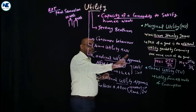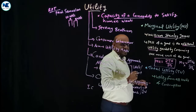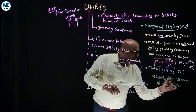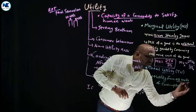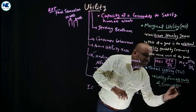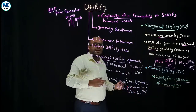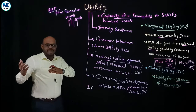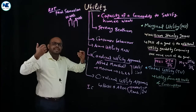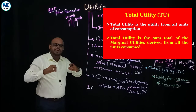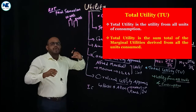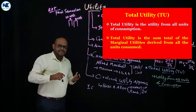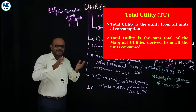Total utility is the utility from all units of consumption. That is, the utility gained by the consumer from all the units of a commodity consumed.